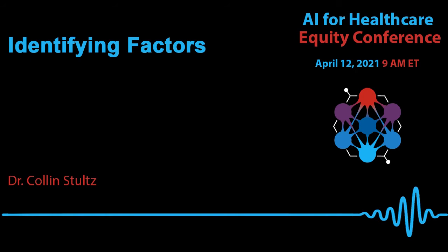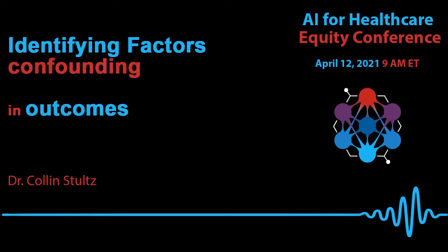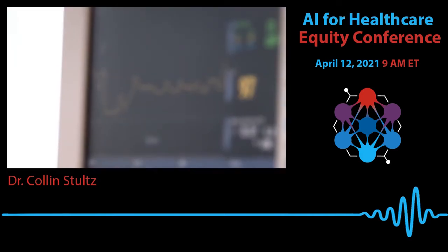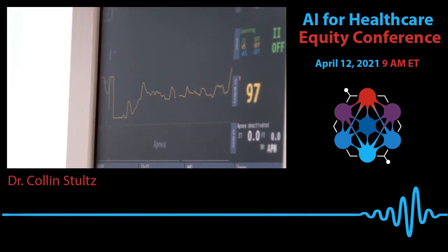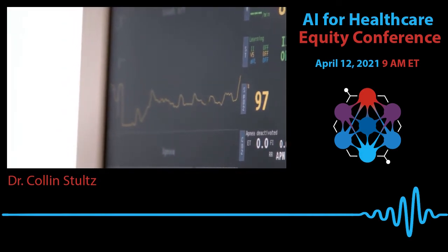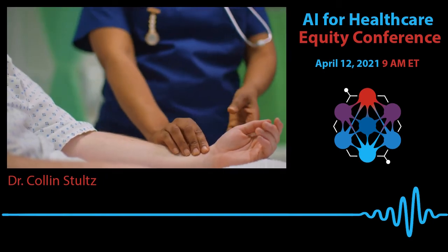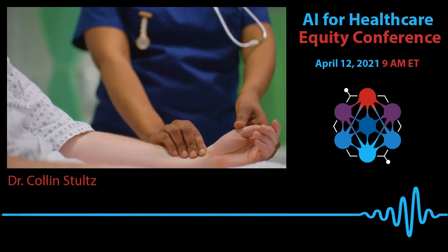My talk will focus on identifying what factors are confounding in outcomes and treatments. A confounding factor is something that affects how treatment is given. There are some obvious things that we know are confounders like age, but there are other things that are more subtle confounders that are hard to tell from the data.